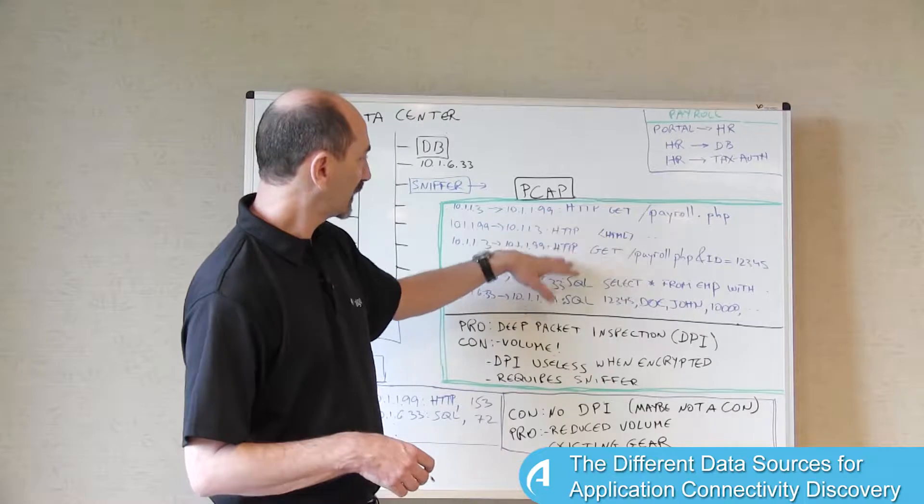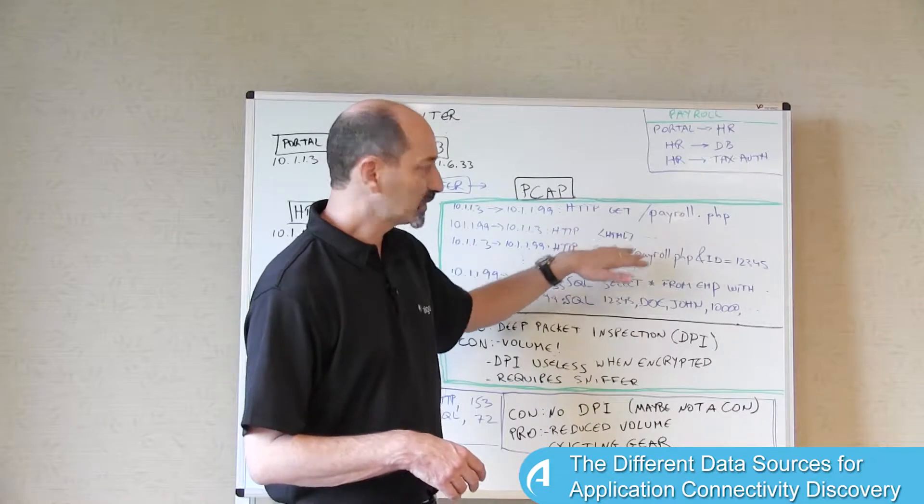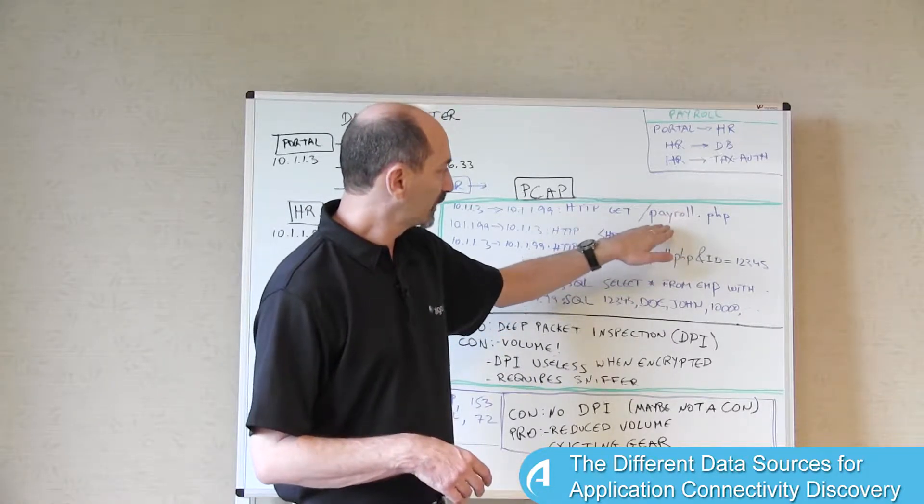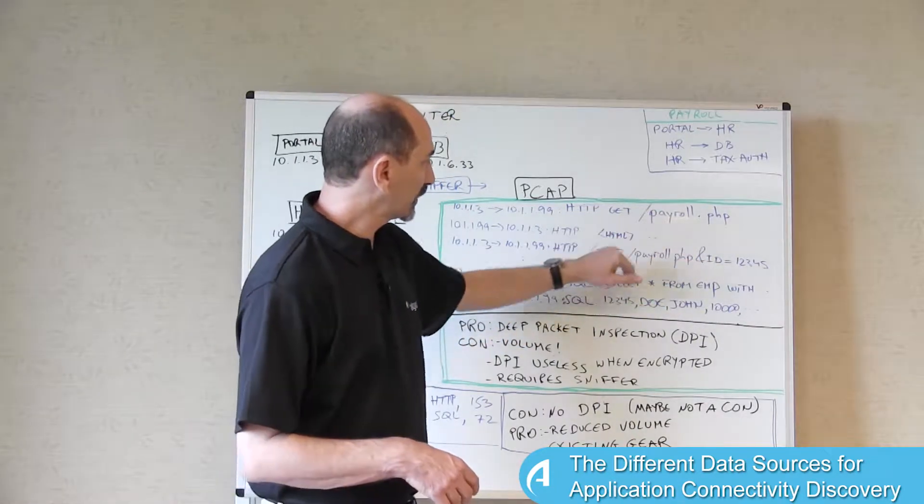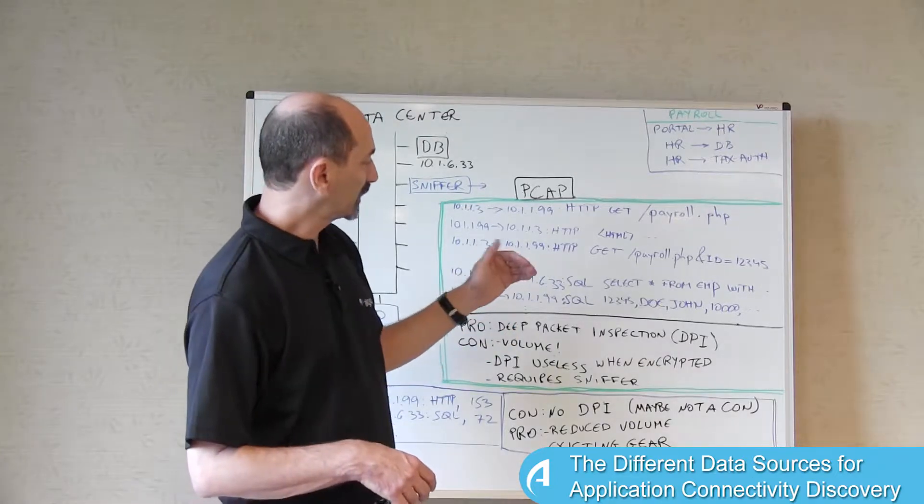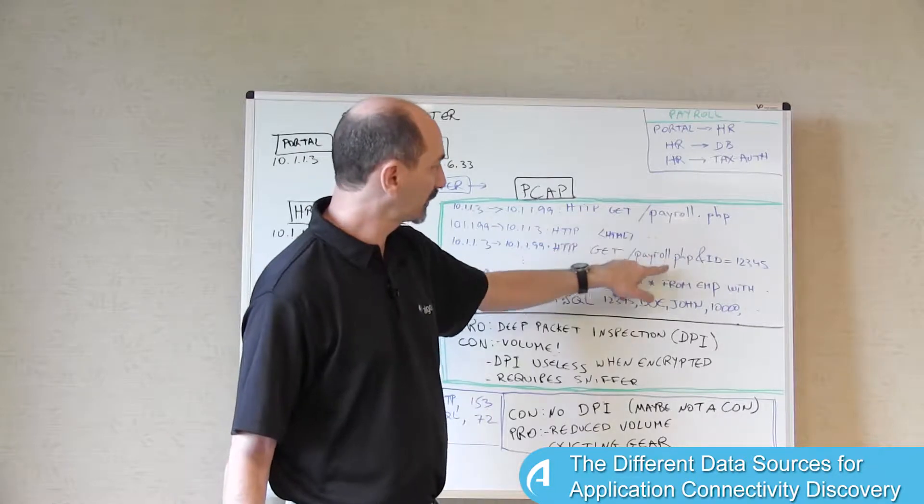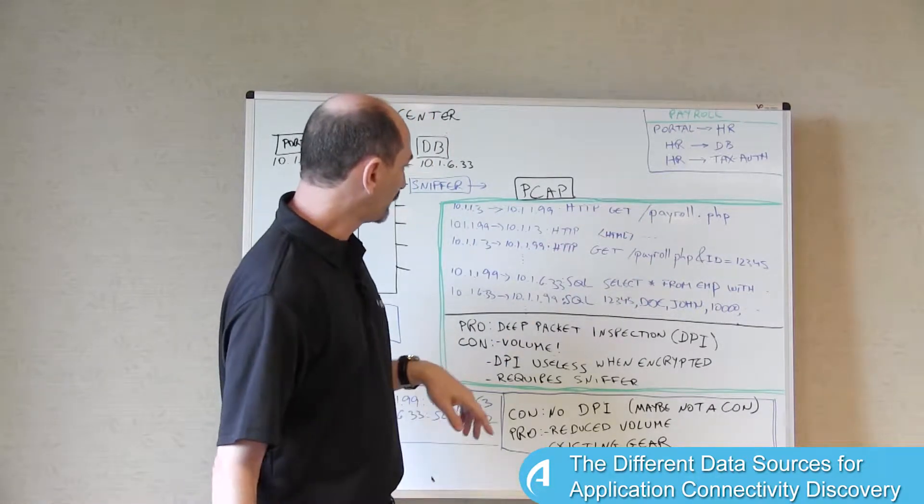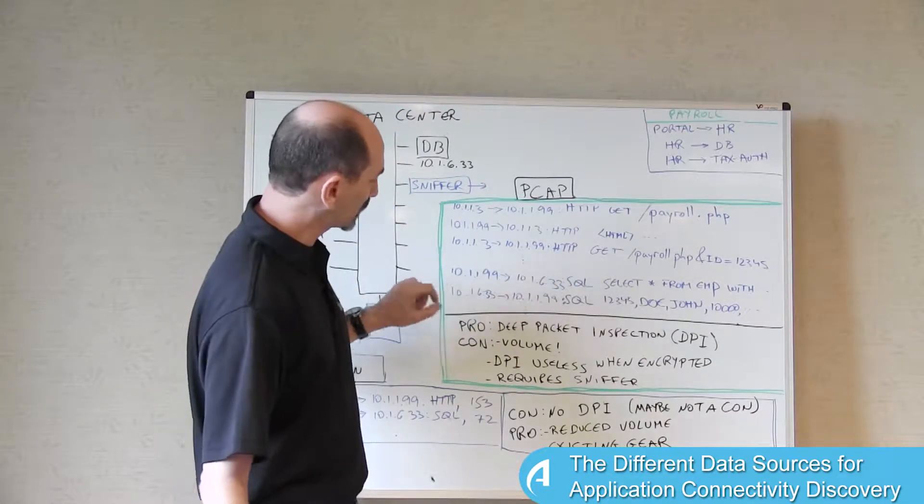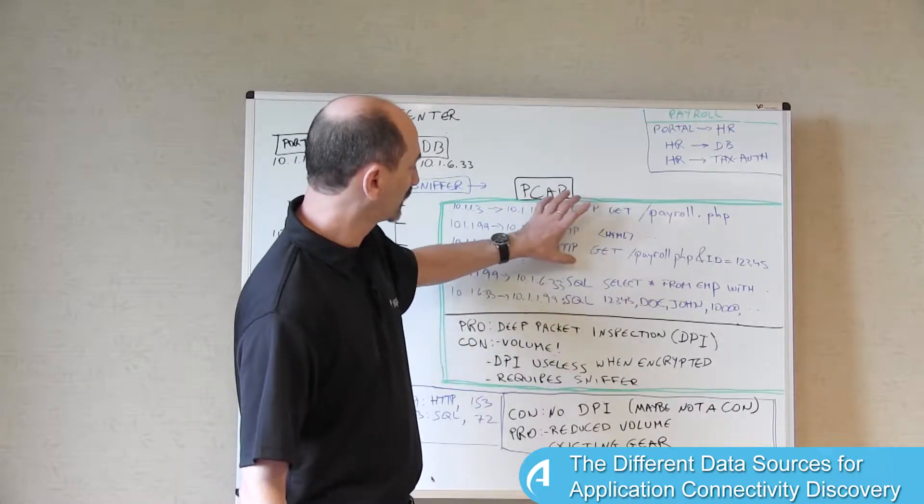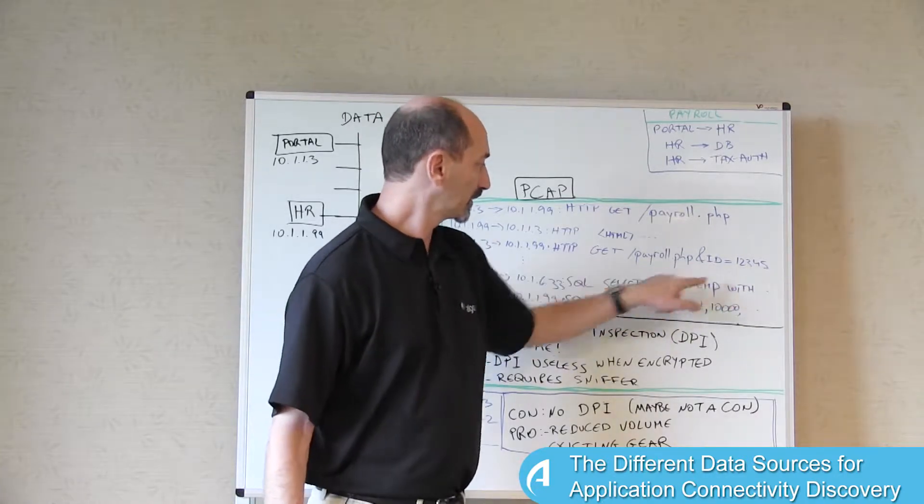For instance, if you have an HTTP connection, it's possible to see inside the packets the HTTP commands and the names of the scripts that are being called and the arguments being passed to them. This information can be mined to identify, for instance, that the application is called payroll. We can deduce that because the string payroll appears here in a few places. We can deduce that these connections down here that are using SQL are connected to the flows of HTTP above, because we can see the same argument appear here and here.